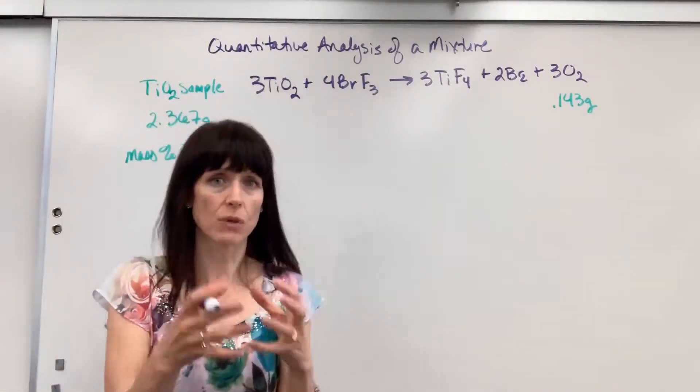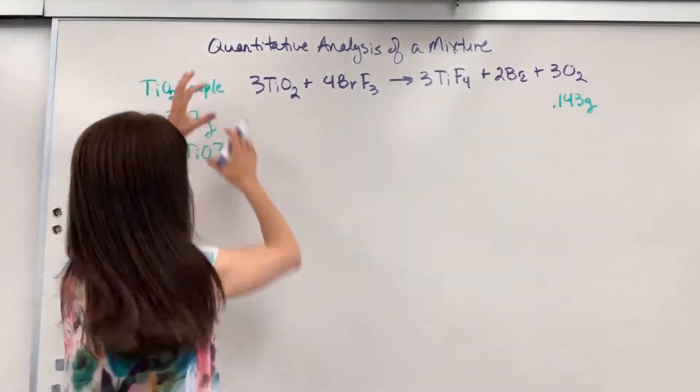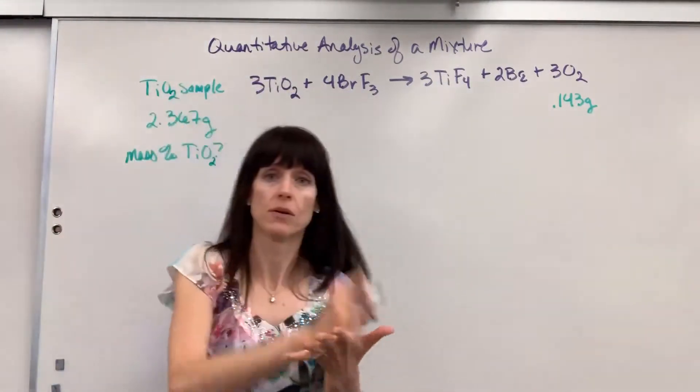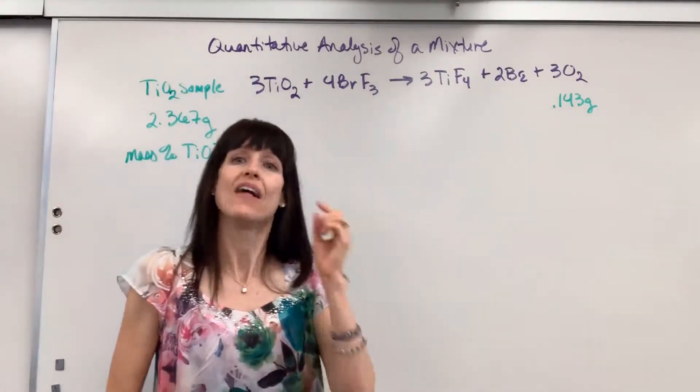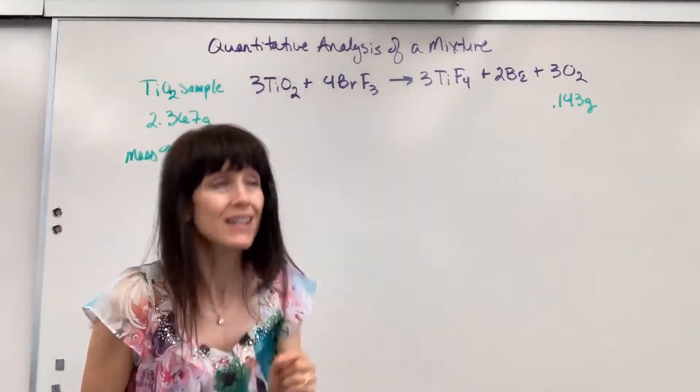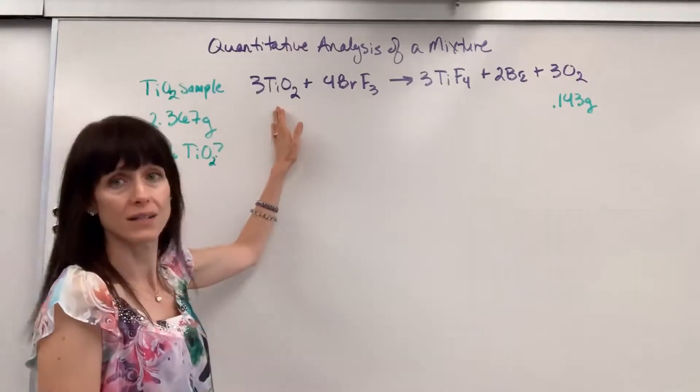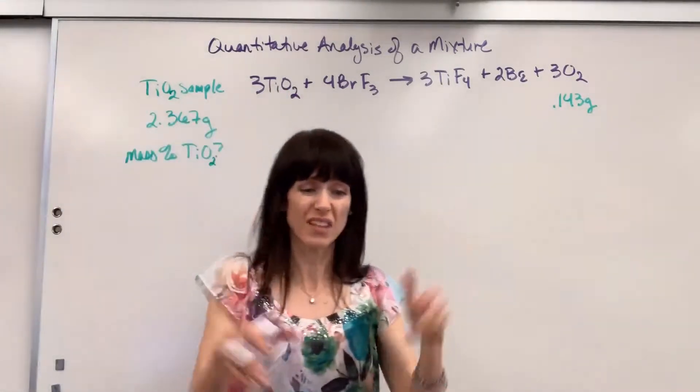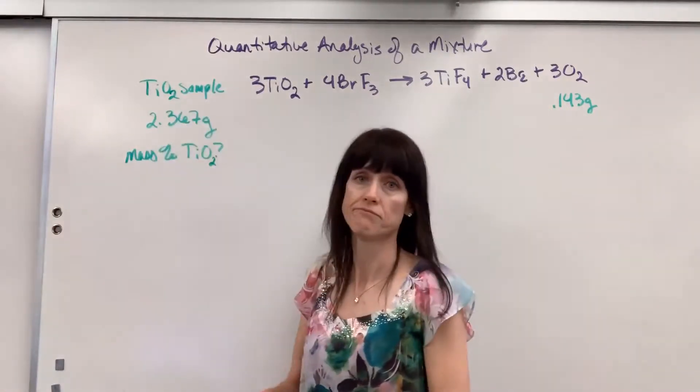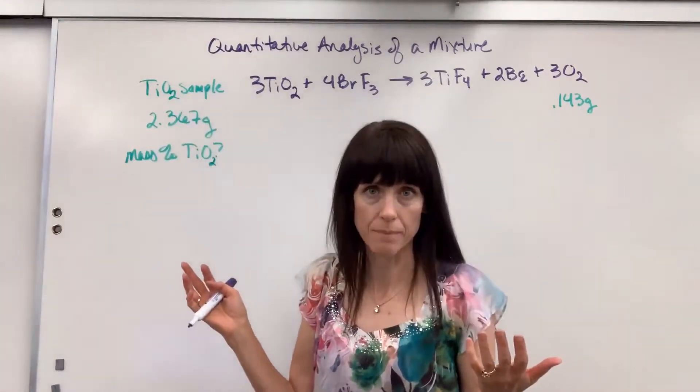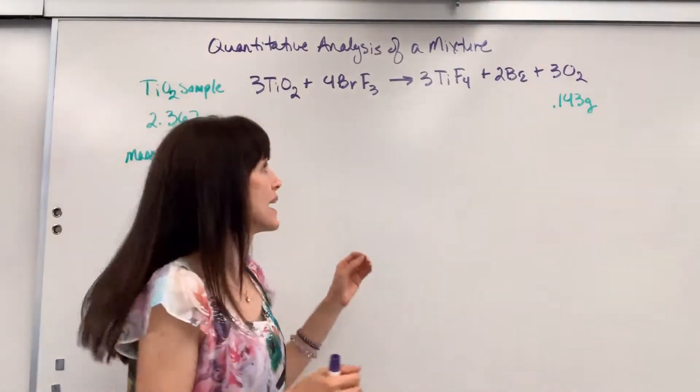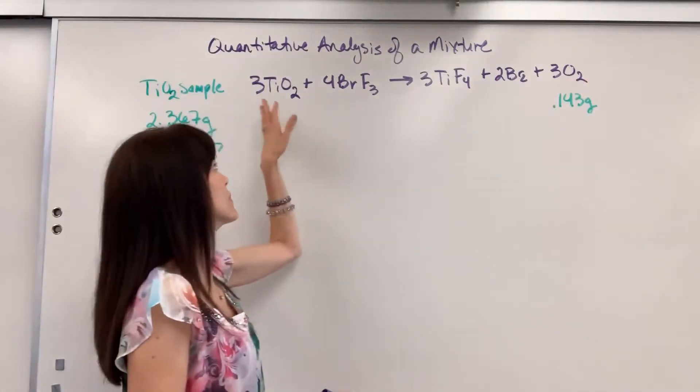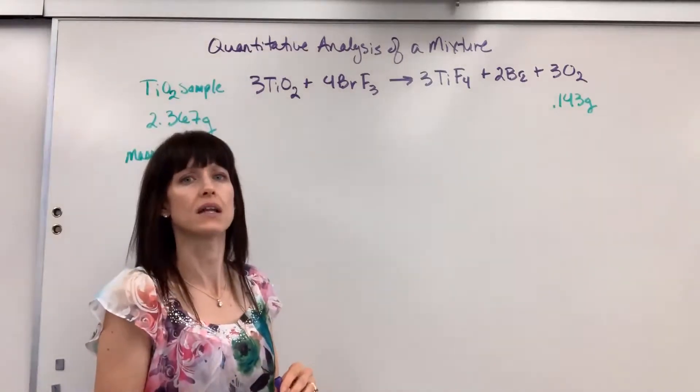Now I want you to have this visual. They would take the whole sample. The whole mixture. That impure sample. They would pour the bromine trifluoride on it and that will only react with the titanium four oxide. So we know all the oxygen just came from this titanium four and all the other compounds that are in this sample right here, they're just not going to do anything.